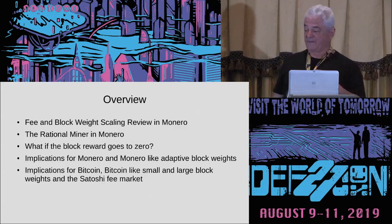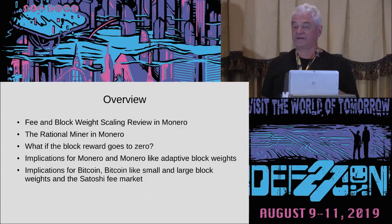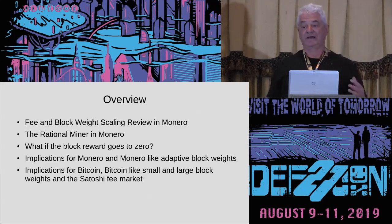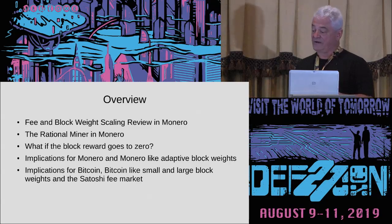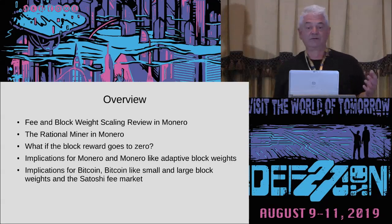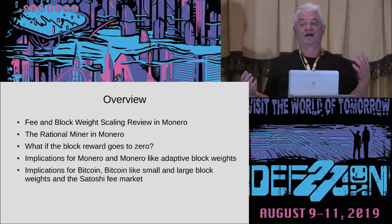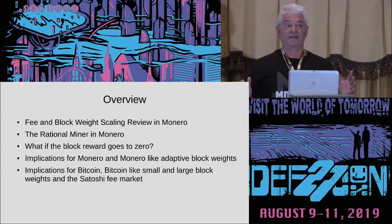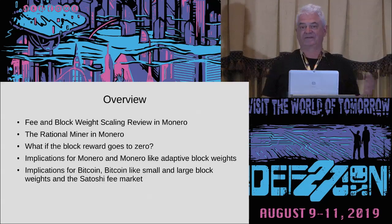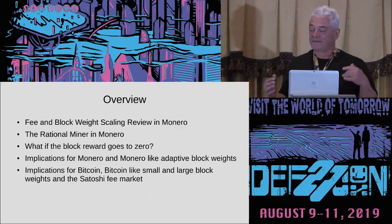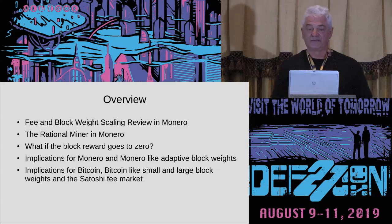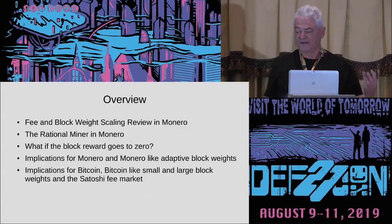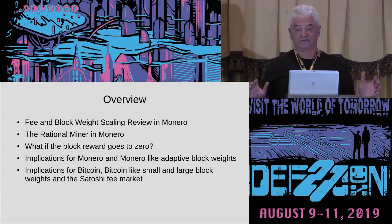My next topic will be the rational miner: what is a rational miner in Monero and how does a fee market in Monero actually work? What happens when the block reward goes to zero? Is our tail emission good enough? Then implications for Monero adaptive block weights, and implications for Bitcoin and Bitcoin-like coins and the Satoshi fee market.